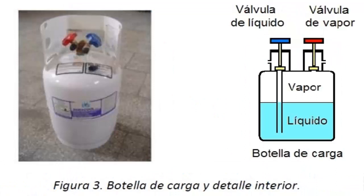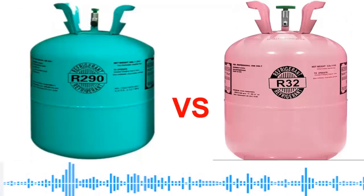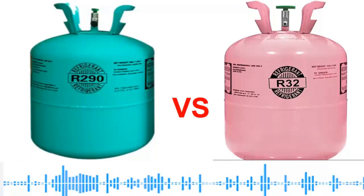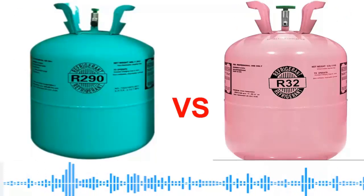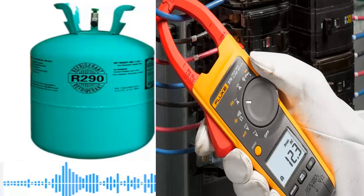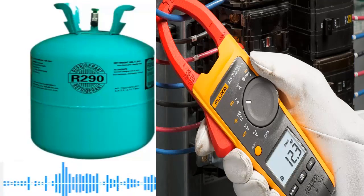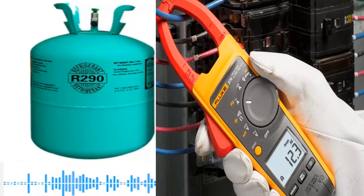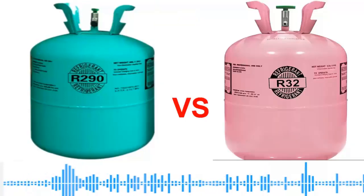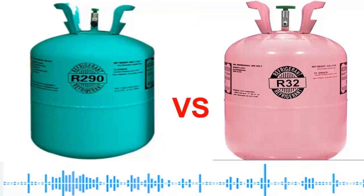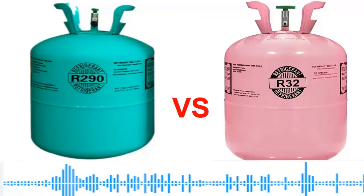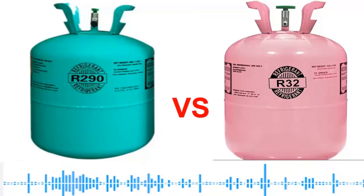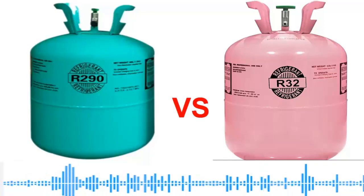An important aspect of the R290 is its efficiency. The R290 is a more efficient gas than the R32 and the R410A. Comparing it with the R32, we can say that it has about 5% better efficiency. The mass flow rates of the R290 are very low compared to those of the R32 — they are much lower.